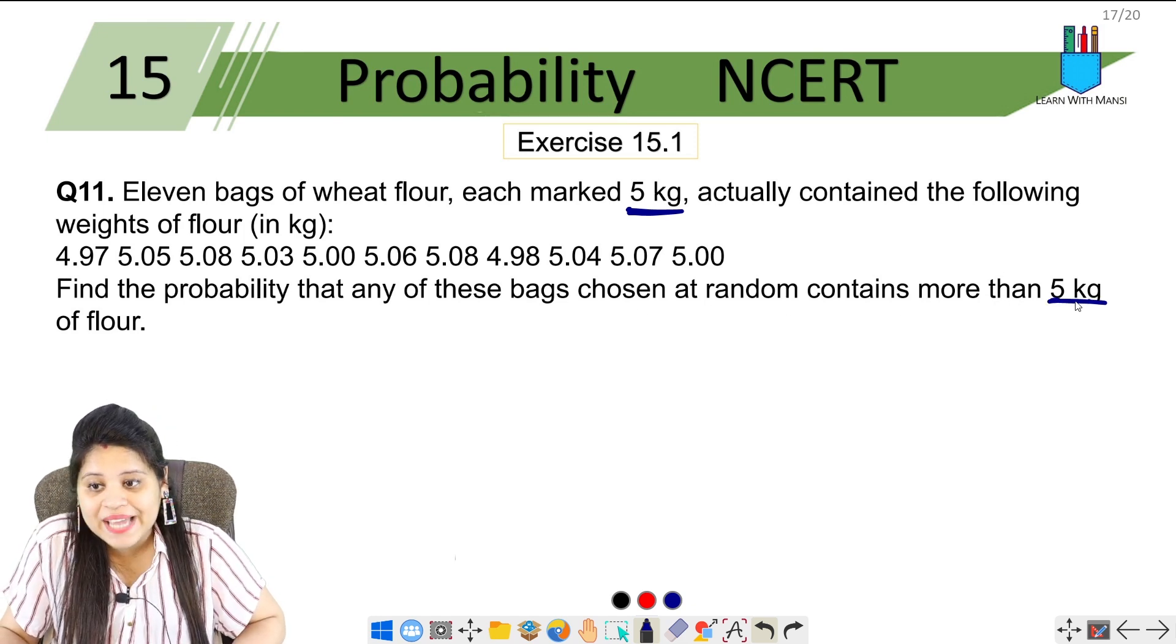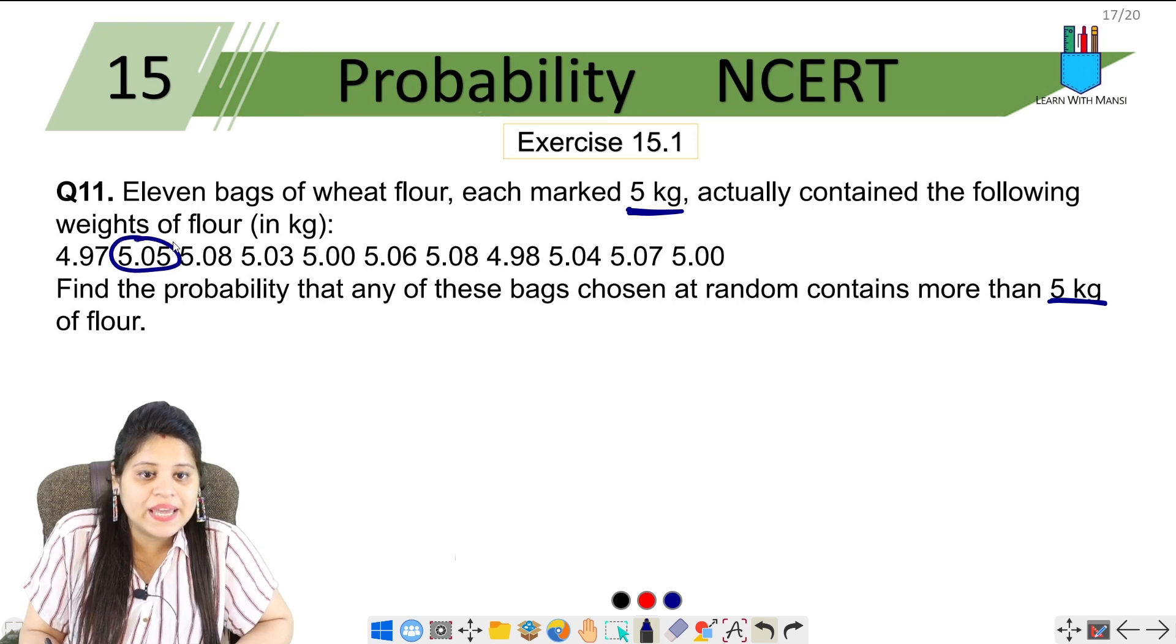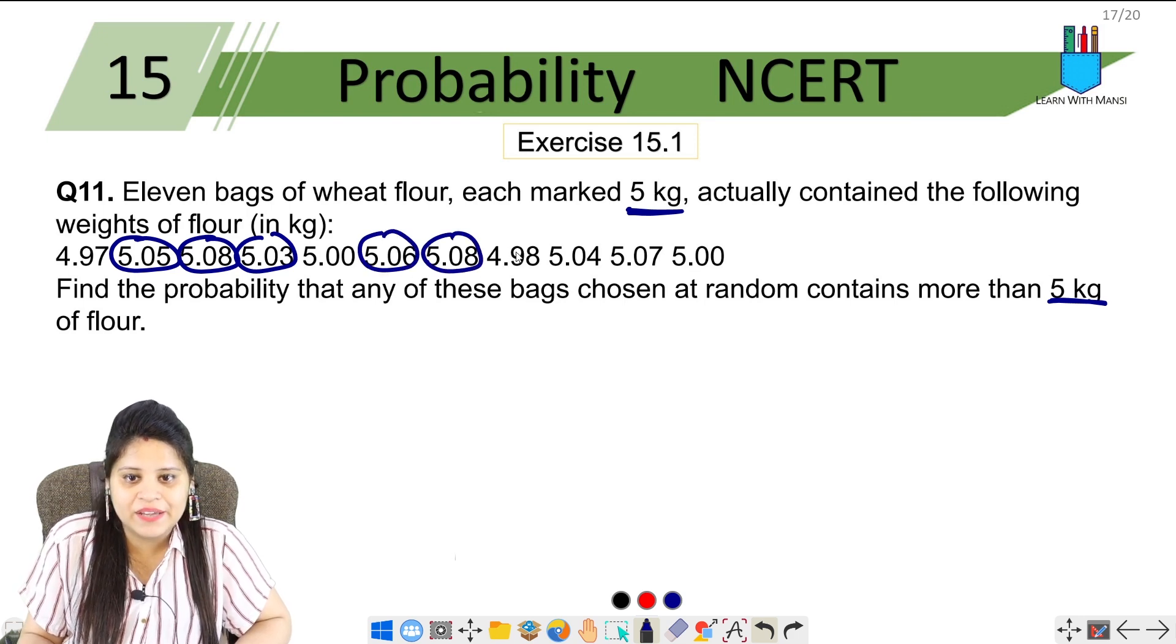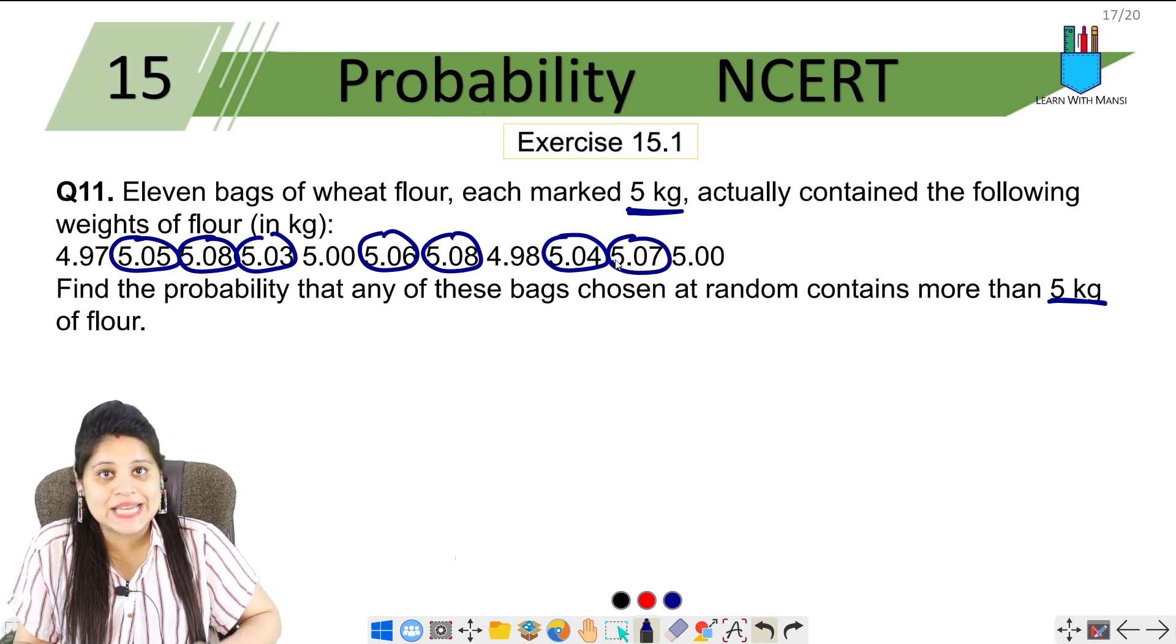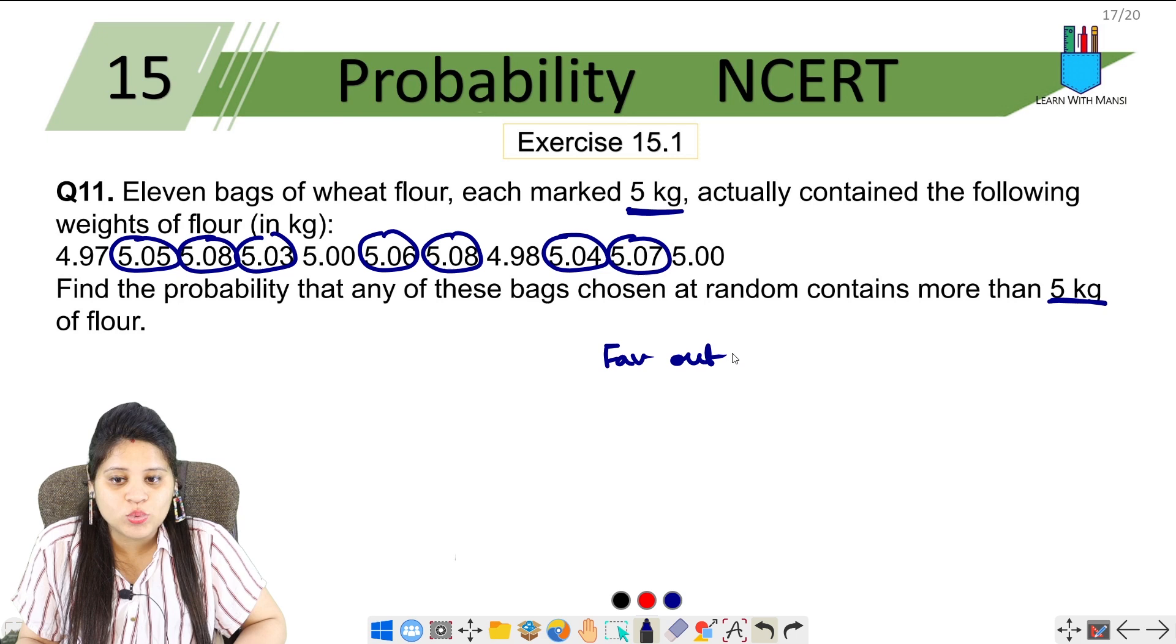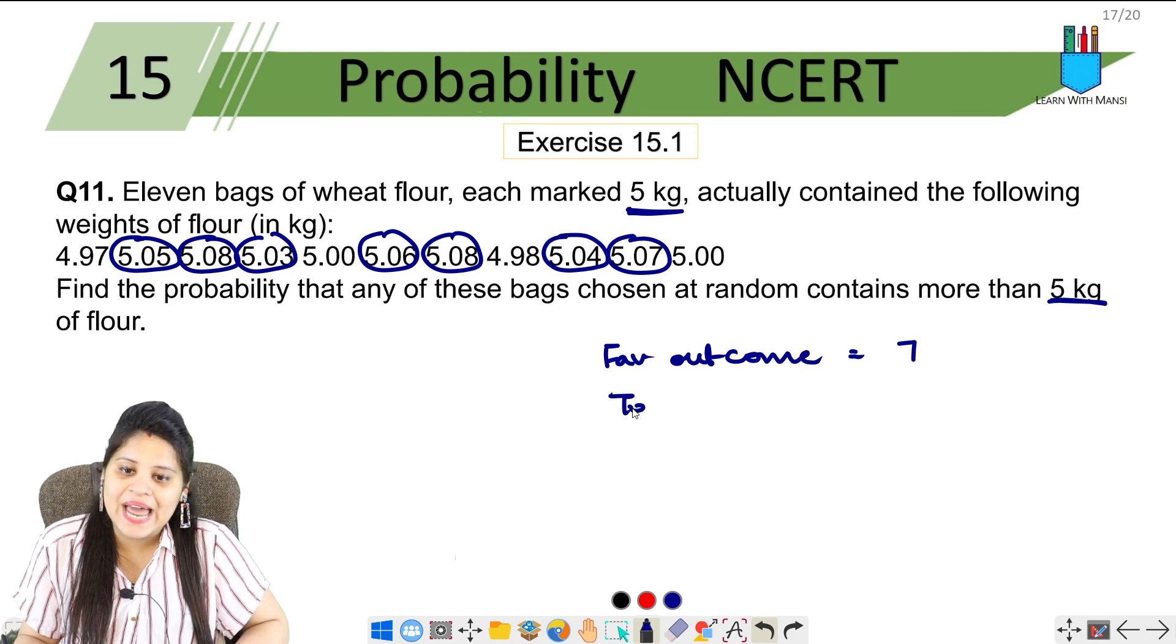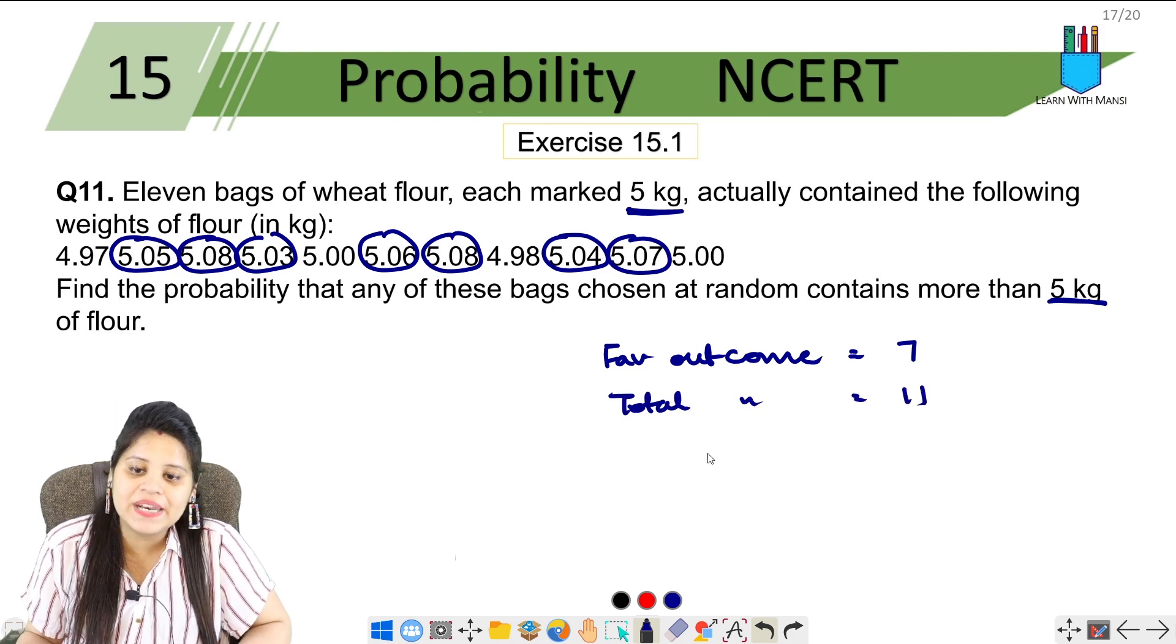More than 5 kg - let me count: one, two, three, four, five - this is less than five. Then six, seven - seven bags have more than five kg. So our favorable outcome is seven. We can write: bags with more than 5 kg flour equals seven. And total number of bags, total outcome, is 11.